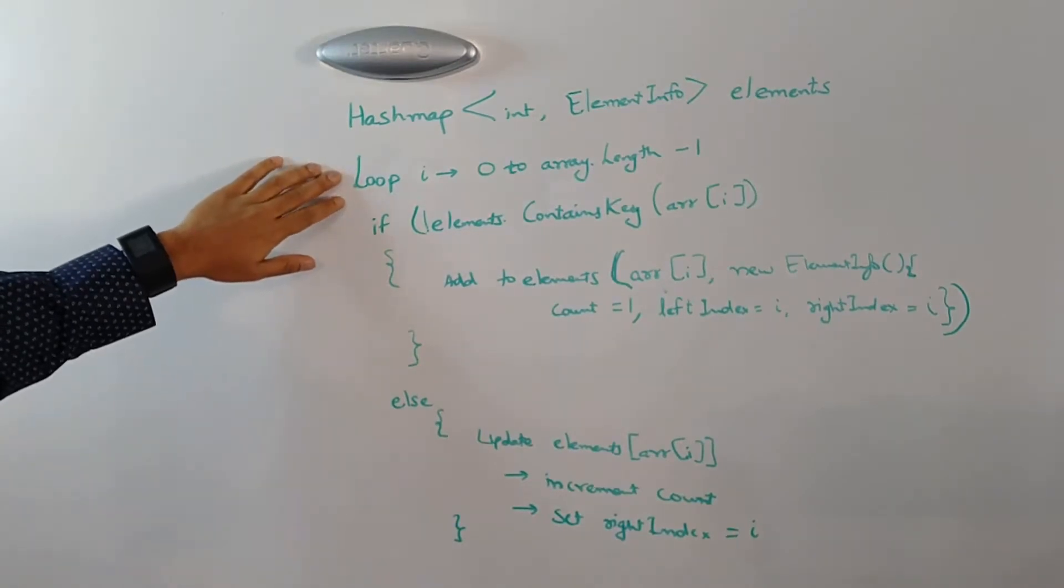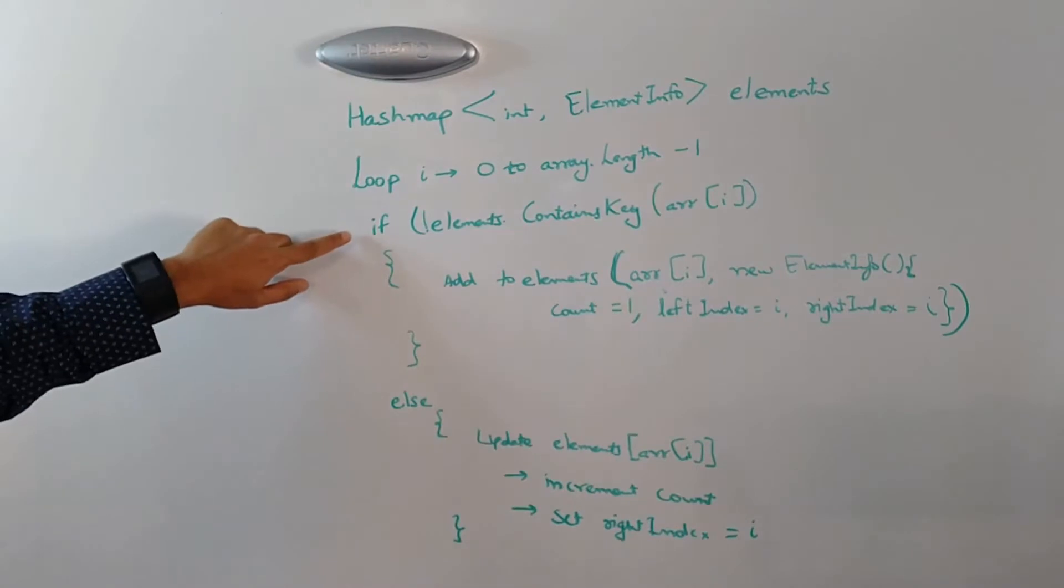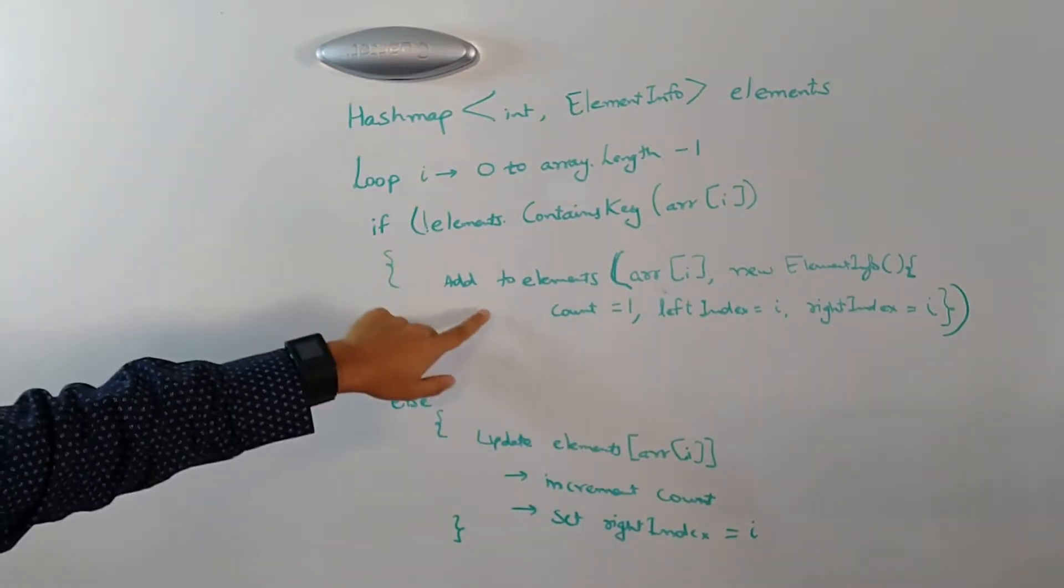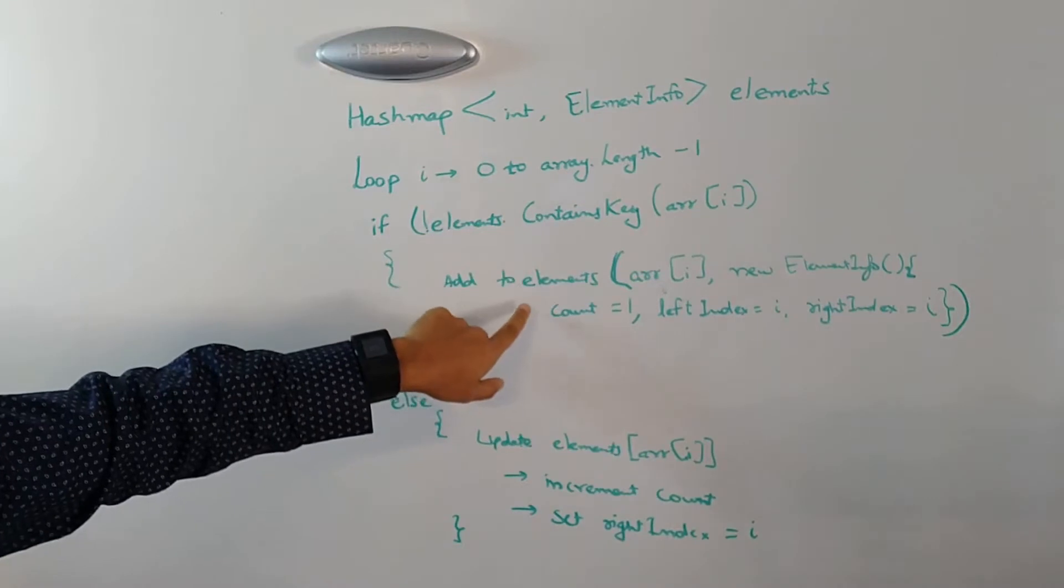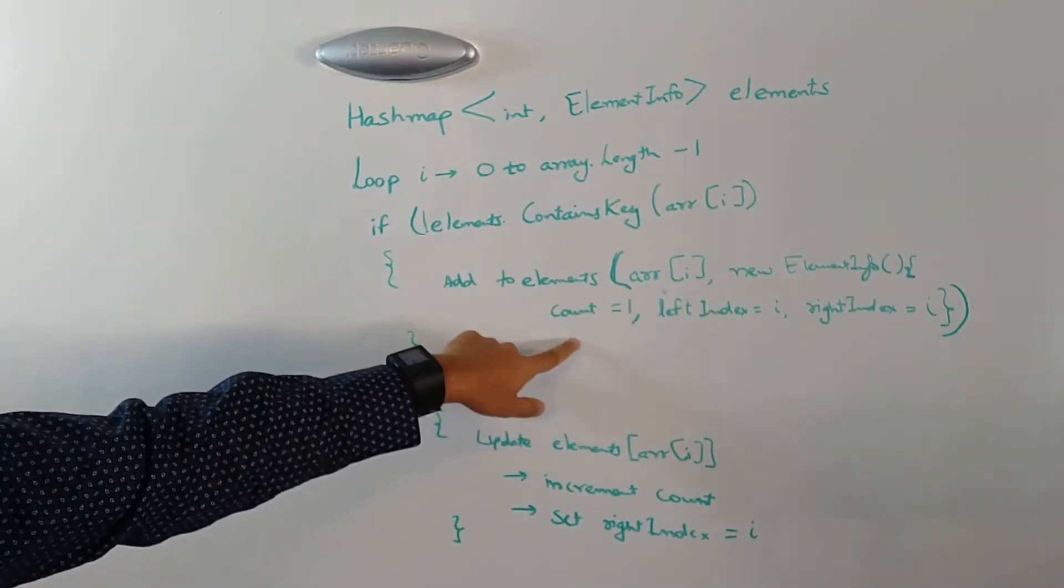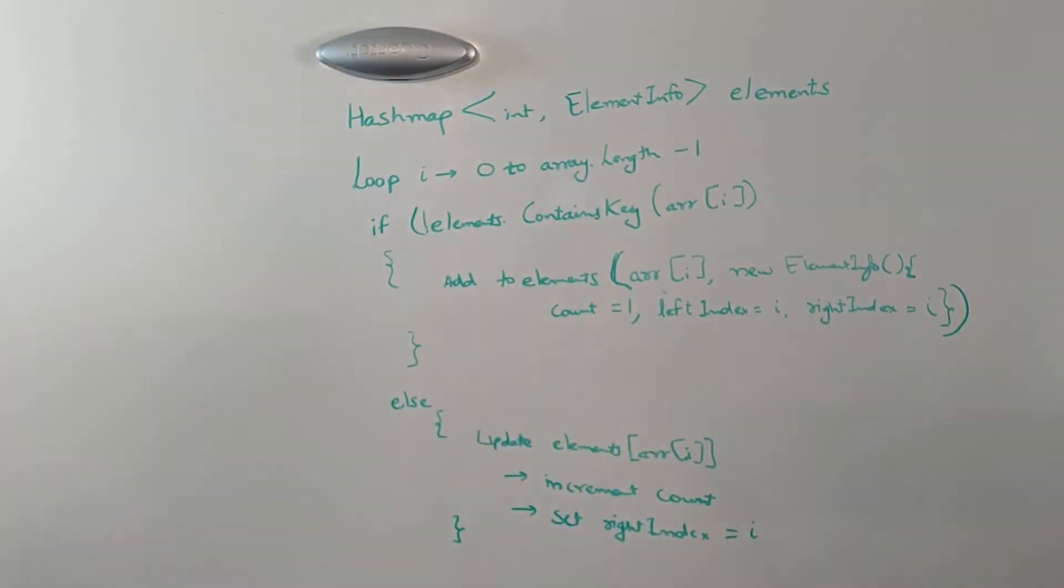Next we loop through the array from 0 to the end of the array. For each and every element we check if it is already in the hash map. If it is not in the hash map, we simply add the element to the hash map along with a new element info with count of 1, left index equal to i and right index equal to i.